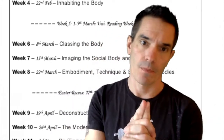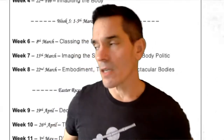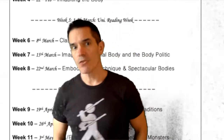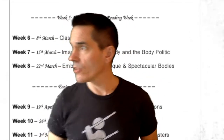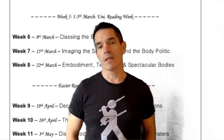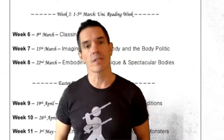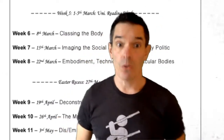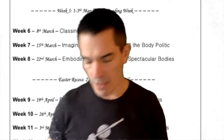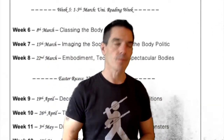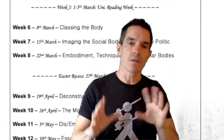Week nine, after Easter, is called Deconstructing East-West Bodily Traditions. Week ten is called The Modern Ancient Body — the idea of our fantasies about ancient bodies and our attempts to reconstruct them in the present. Week eleven is the final taught week, called Disembodiment, Visions, Spectres, Monsters, Monstrous Bodies, Horror, Ghosts, Bits and Pieces, Fragments, and Deconstruction again.